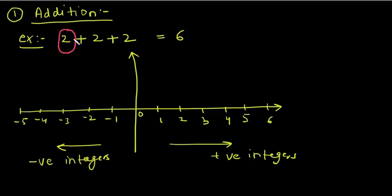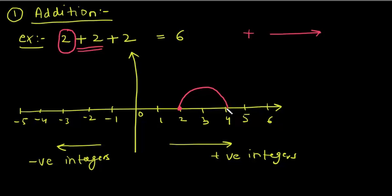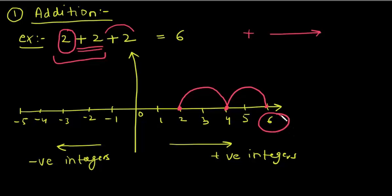So you have to start from 2 — right now you are at position 2 on the number line. Now we have to add plus 2. So plus means you have to go in the right direction by 2 steps, so you go to 4. After 2 plus 2, you are at number 4. Now you have to again add plus 2, so you will move to number 6. The final answer is 6.